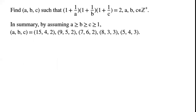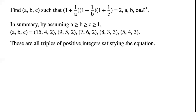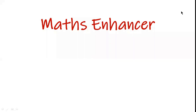In summary, assuming a ≥ b ≥ c ≥ 1, the triples (a, b, c) are: (15, 4, 2), (9, 5, 2), (7, 6, 2), (8, 3, 3), (5, 4, 3). These are all triples of positive integers satisfying the equation. Thank you for watching.